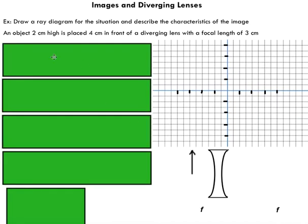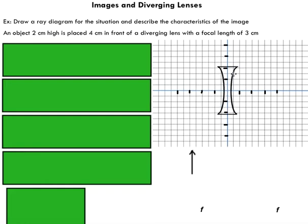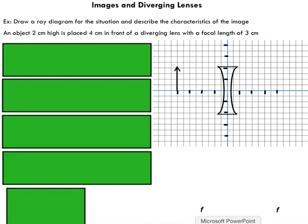Next example: same sort of problem — draw a ray diagram and describe characteristics of the image. This time I'm working with a diverging lens. I've got an object that's two centimeters high, placed four centimeters away from the diverging lens. In this case, the focal length is three centimeters. I've labeled two focal points, one on the object side and one on the opposite side, and I'm ready to start following the steps.